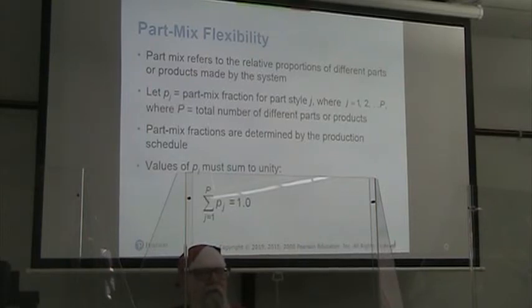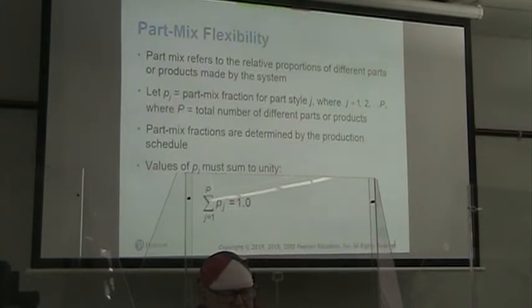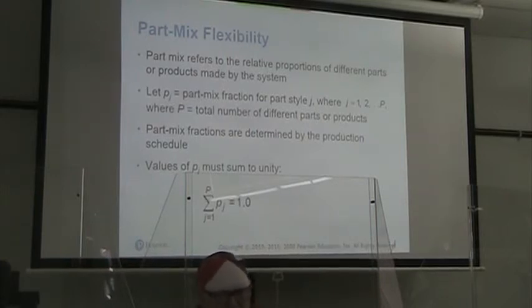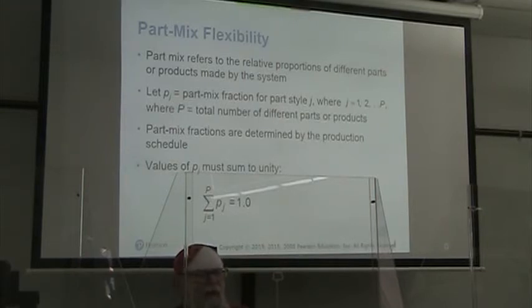When we're talking about part mix flexibility, our part mix refers to the relative proportions of different parts or products made by the system. We let P sub J be the part mix fraction for part style J, where J equals 1, 2, dot dot dot, up to capital P, where capital P equals the total number of different parts or products. Our part mix fractions are determined by the production schedule.